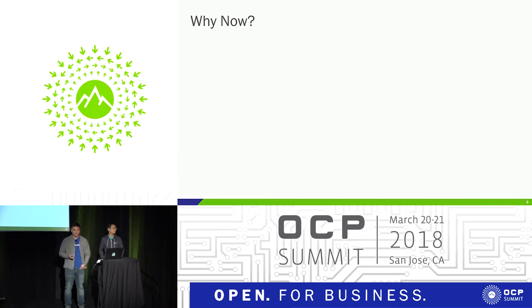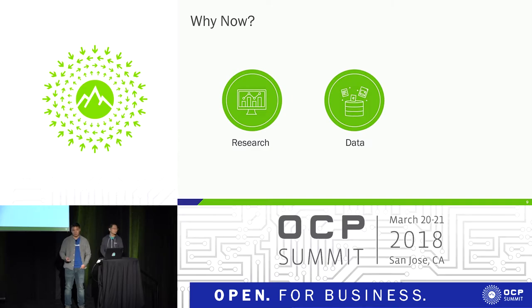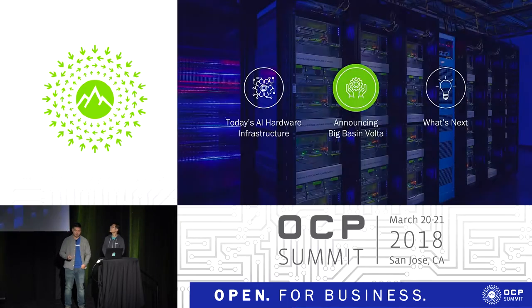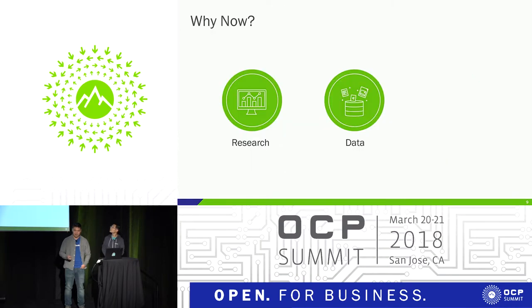Artificial intelligence itself has been coined since the 1950s. We think that the reason why artificial intelligence is viable today is because of more advanced research being done in the field, a lot more publicly available data to train on, and also higher-powered compute, which we will discuss more later on today.